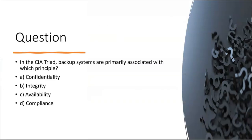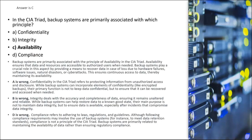Next question: In the CIA triad, backup systems are primarily associated with which principle — confidentiality, integrity, availability, or compliance? Compliance is not part of the triad. The answer is C, availability. Availability ensures that data and resources are accessible to authorized users when needed. Backup systems play a crucial role by providing a means to recover data in case of loss due to hardware failure, software issues, natural disasters, or cyber attacks, ensuring continuous access to data. Confidentiality refers to protecting information from unauthorized access and disclosure. Integrity deals with accuracy and completeness of data, ensuring it remains unaltered and reliable.